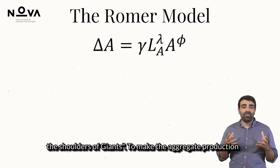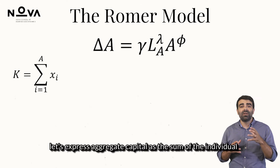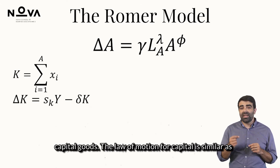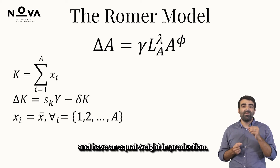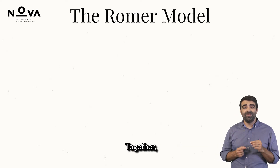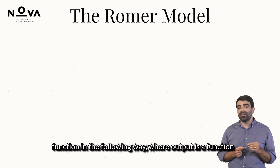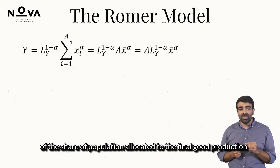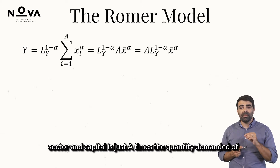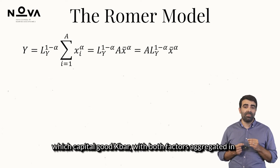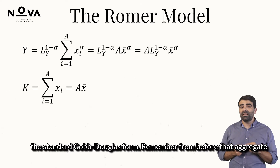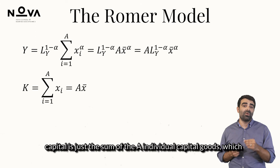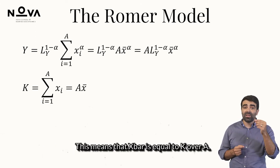To make the aggregate production function more simple, let's express aggregate capital as the sum of the individual capital goods. The law of motion for capital is similar as before — capital increases by net investment. Since all capital goods play an identical role in the production process, one can assume each of them faces similar demand and has an equal weight in production. Together, these assumptions mean that we can rewrite the production function, where output is a function of the share of population allocated to the final good production sector, and capital is A times the quantity demanded of each capital good x-bar, in the standard Cobb-Douglas form. Remember that aggregate capital is just the sum of the A individual capital goods, which equate to A times x-bar, so x-bar equals k over A.